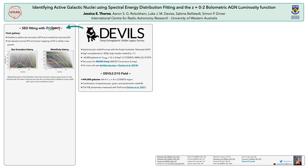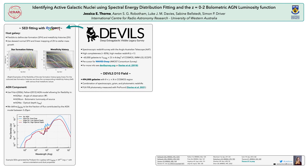Here we show on the left examples of the star formation history and on the right the metallicity history. We also use an AGN component for this work, using the Fritz and Feltre AGN model, allowing for flexibility in the angle of observation, the bolometric luminosity of the central source, and the optical depth of the dusty torus. We define F-AGN to be the fraction of flux contributed to the SED by the AGN model between 5 and 20 microns.